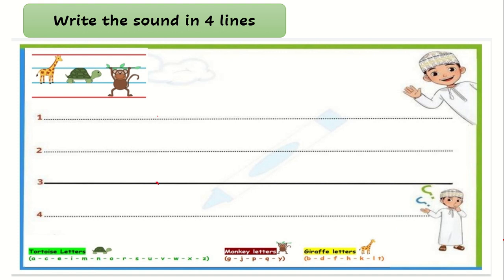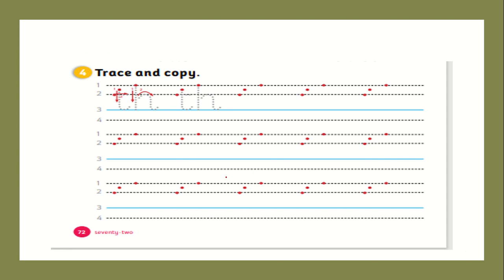Now my students, it's time to write the sound — 'th' and 'th'. How can we write it? Like this: down, down, flick, then cross. Then we will write the sound 'h': down, down, up, round, flick. So this is 'th'.